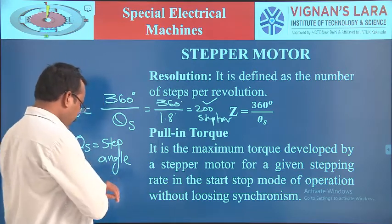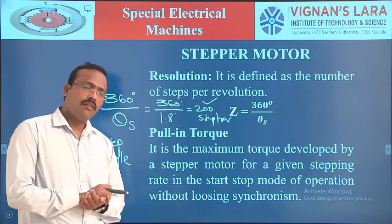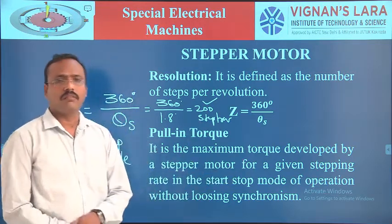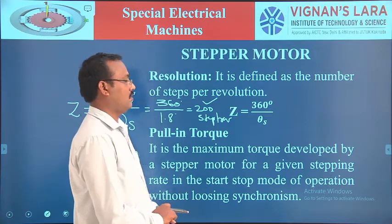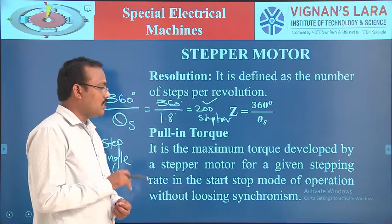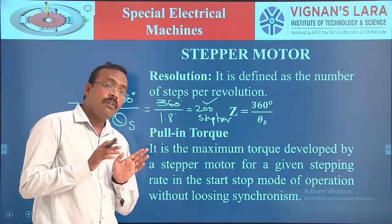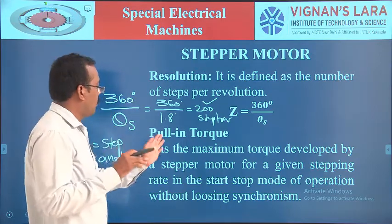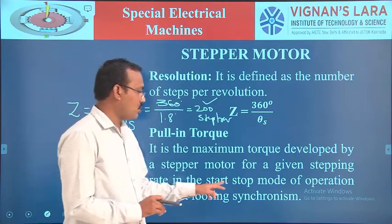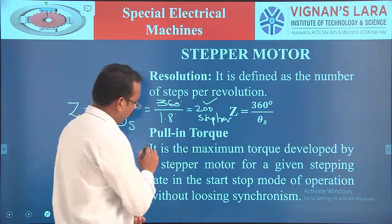The next one is pull-in torque. We have two kinds of torque: pull-in torque and pull-out torque. Pull-in torque is the maximum torque developed by a stepper motor for a given stepping rate in the start-stop mode of operation without losing synchronism. In this mode, maintaining synchronism is what defines the pull-in torque.